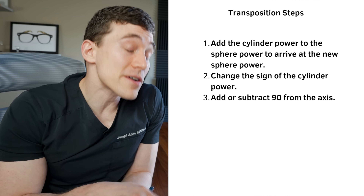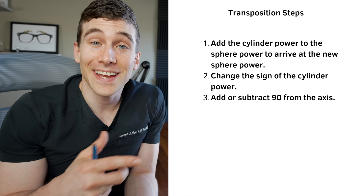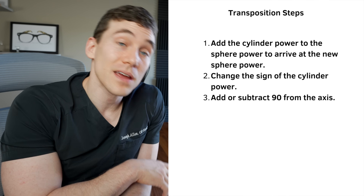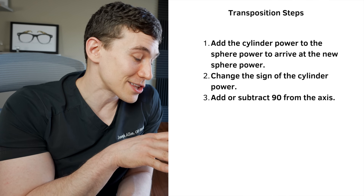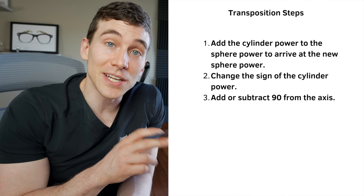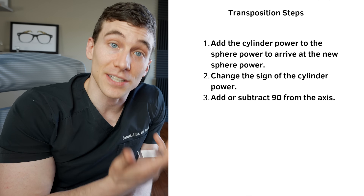When converting a plus cylinder back to minus cylinder, it's the exact same steps: add the plus cylinder to the sphere power, change the cylinder sign from plus to minus, and change the axis again by adding another 90 degrees. I hope this all makes sense — I know it's a little extra credit, but if you have any questions about this math or any part of a glasses prescription, let me know in the comments section below.